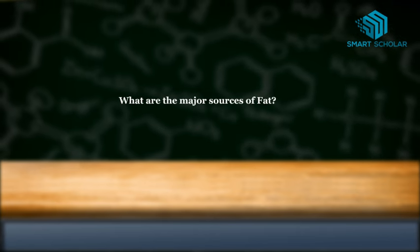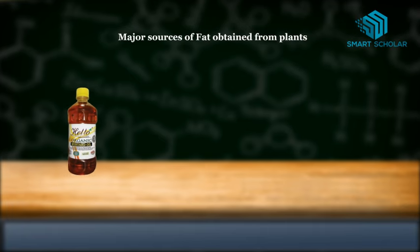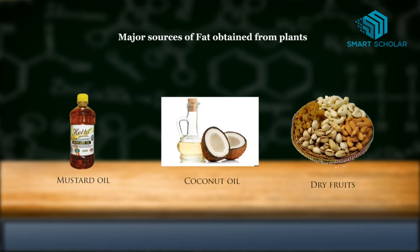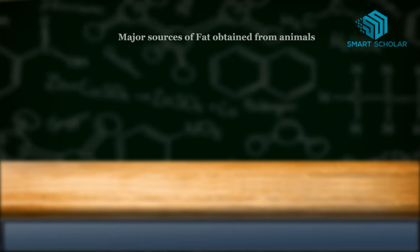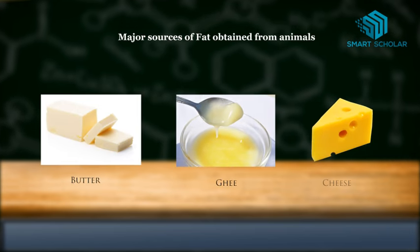What are the major sources of fat? The major sources of fat obtained from plants are mustard oil, coconut oil, and dry fruits. Major sources of fat obtained from animals are butter, ghee, and cheese.